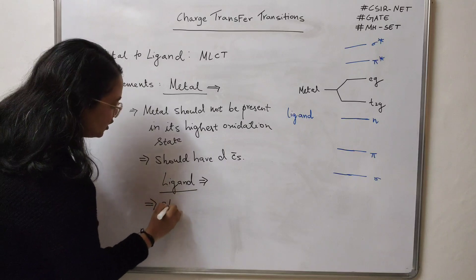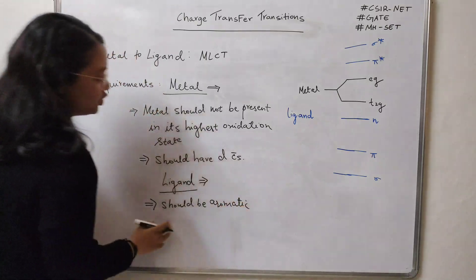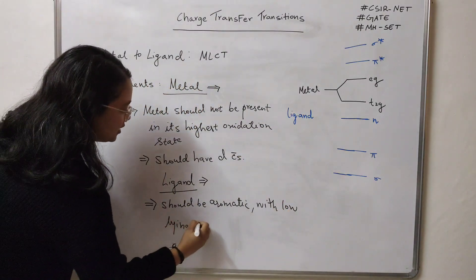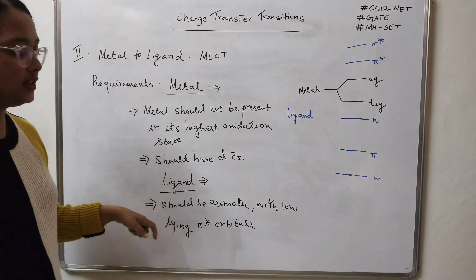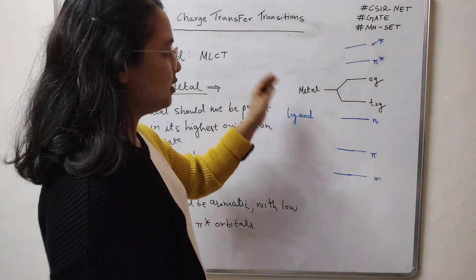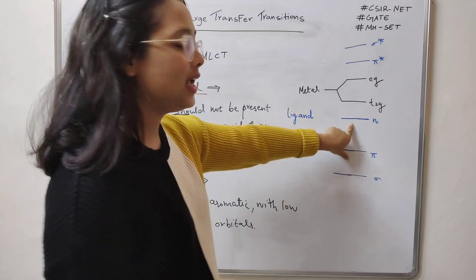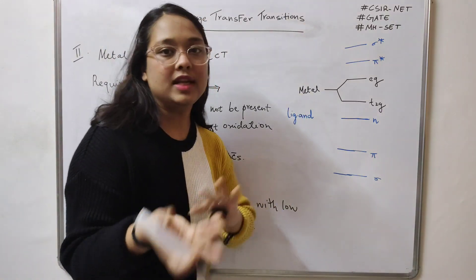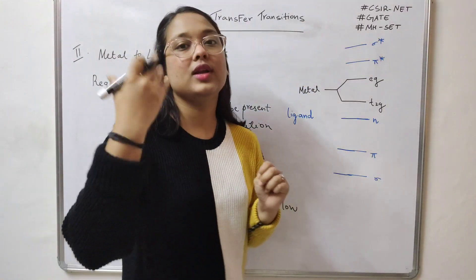Now the requirements with respect to the ligand: the ligand should be aromatic with low-lying π* orbitals. You can understand this using energy level data. The ligand orbitals split into σ and π (bonding), n (non-bonding), and π* and σ* (antibonding). Similarly, the metal orbitals split into t2g and eg.